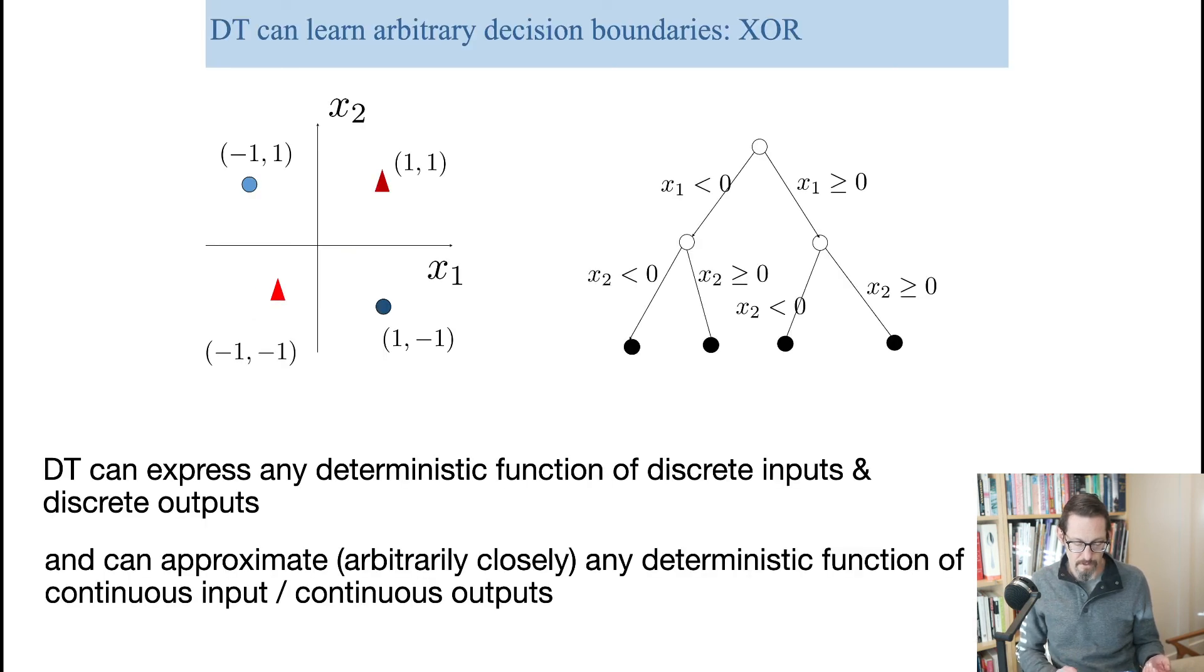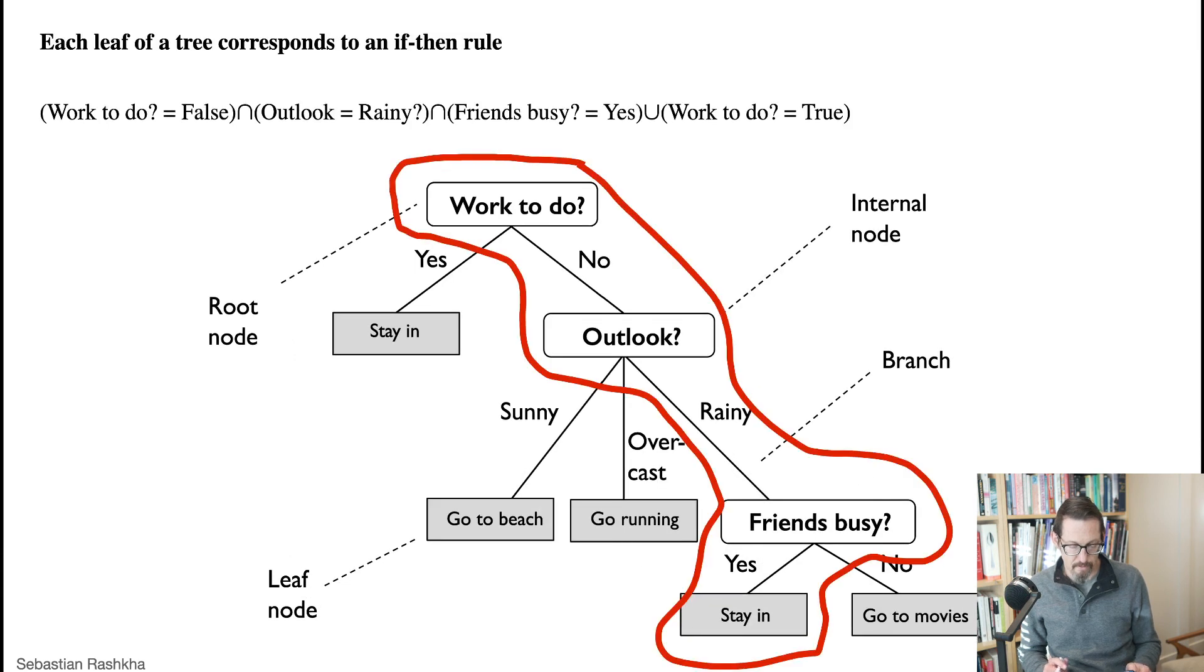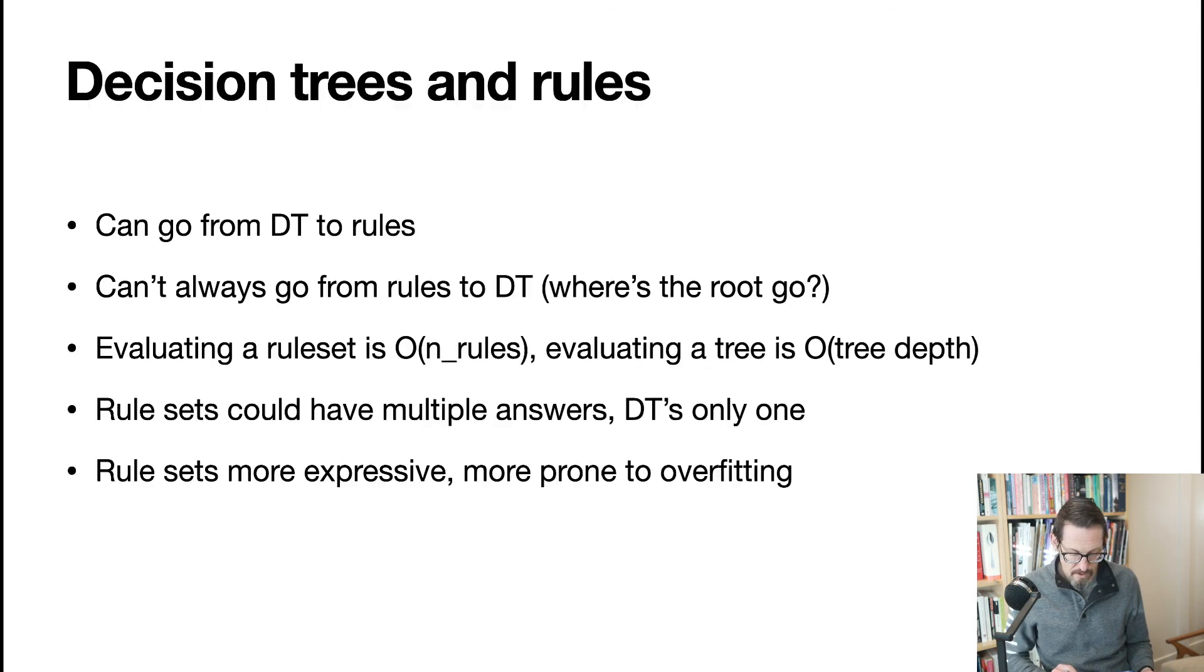Oops. My bad. Sorry about that. When we get a set of rules like this, right, any one of these could be the root. Which one would we pick? We'd have to look through all the rules in the entire rule set, and maybe it's not consistent.